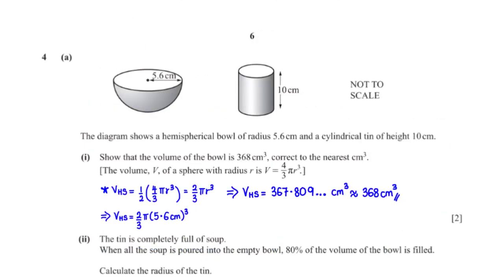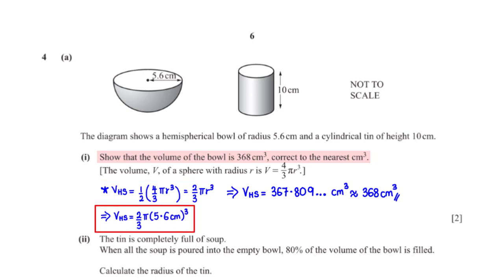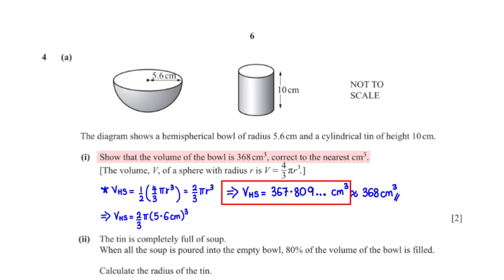The diagram shows a hemispherical bowl of radius 5.6 cm and a cylindrical tin of height 10 cm. Show that the volume of the bowl is 368 cm³ correct to the nearest cm³. The volume of a hemisphere is 2/3 π r³. With r equals 5.6 cm, when we type this into the calculator, we get 367.809 cm³, which is approximately 368 cm³ rounded to the nearest cm³.